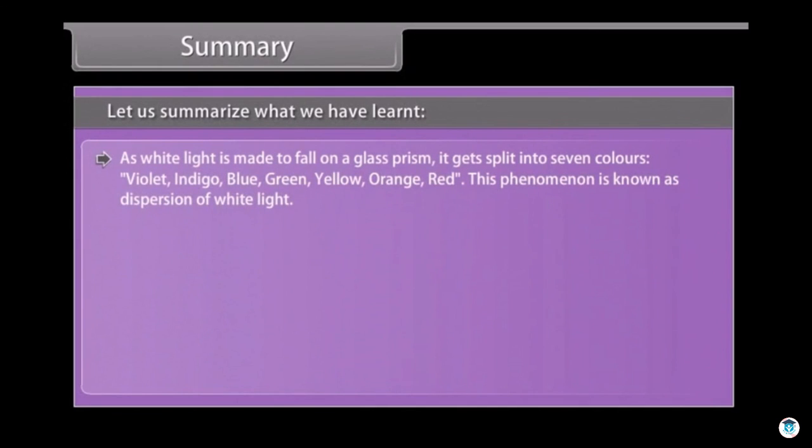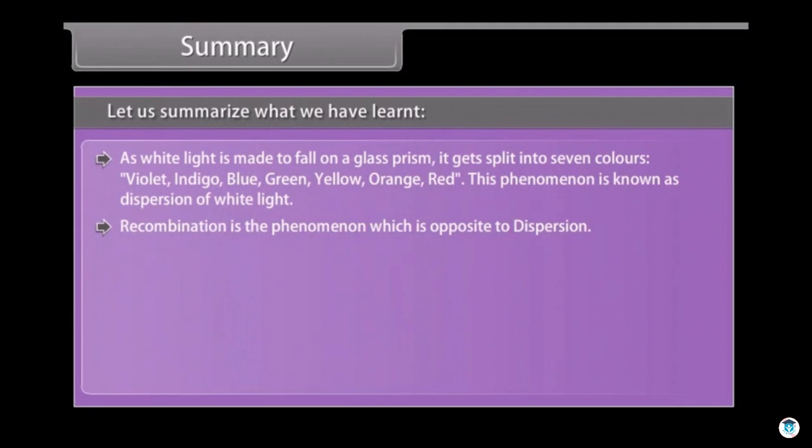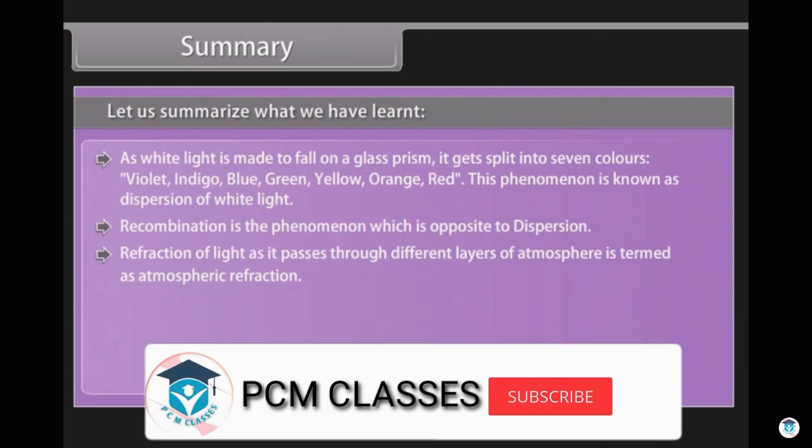As white light is made to fall on a glass prism, it gets split into seven colours: Violet, Indigo, Blue, Green, Yellow, Orange, Red. This phenomenon is known as dispersion of white light. Recombination is the phenomenon which is opposite to dispersion. Refraction of light as it passes through different layers of atmosphere is termed as atmospheric refraction.